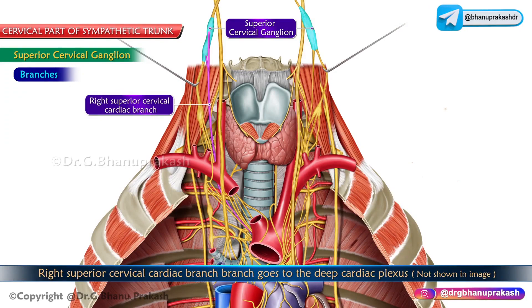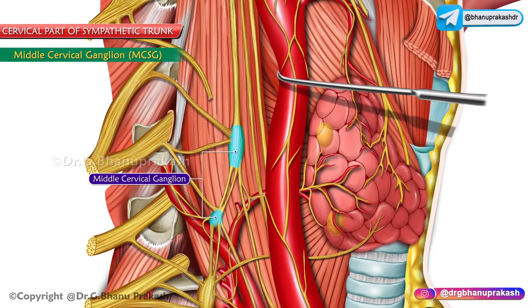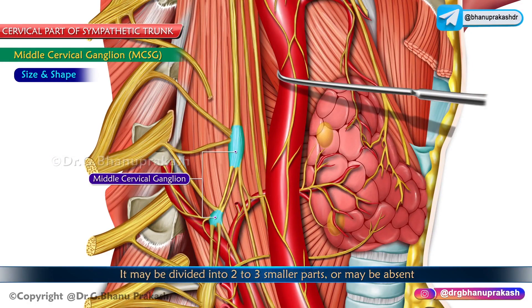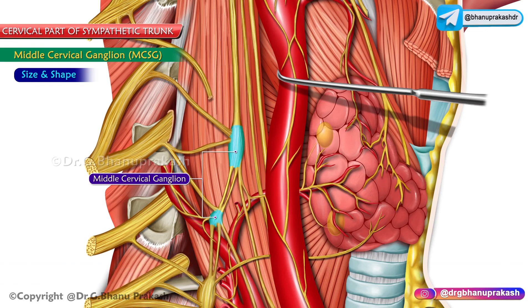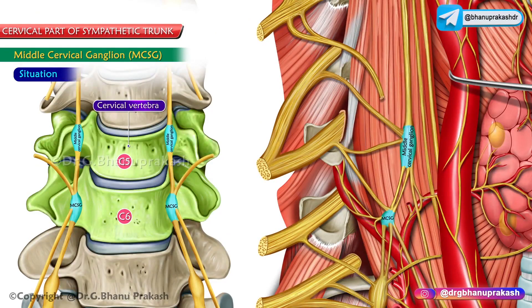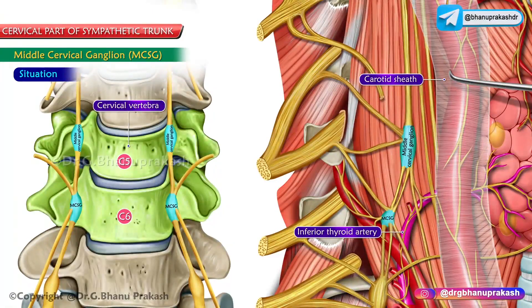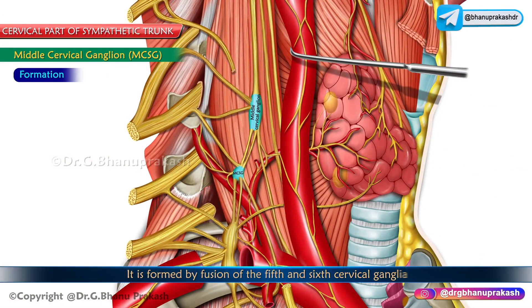The middle cervical ganglion is extremely small and may be divided into two to three smaller parts or sometimes may be absent. It lies in the lower portion of the neck, in front of the vertebra just above the inferior thyroid artery and behind the carotid sheath. It is formed by the fusion of the fifth and sixth cervical ganglia.